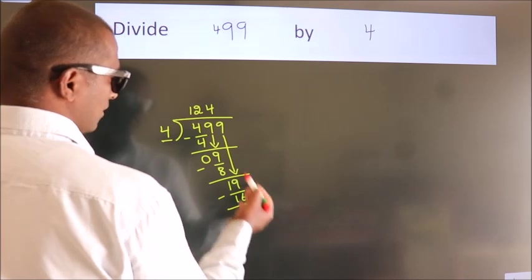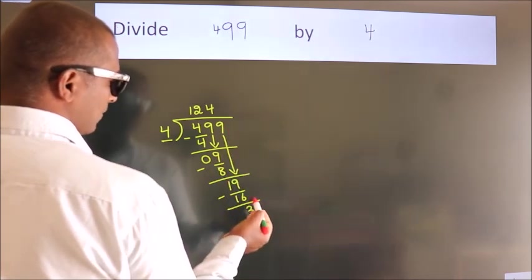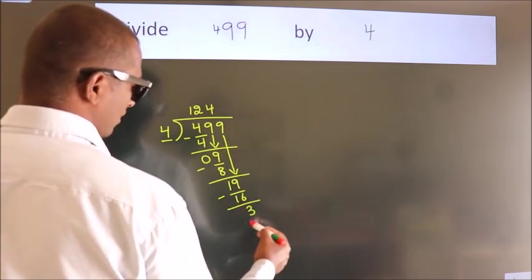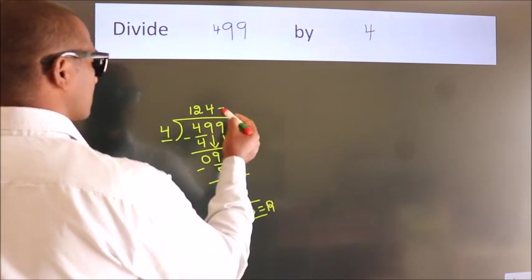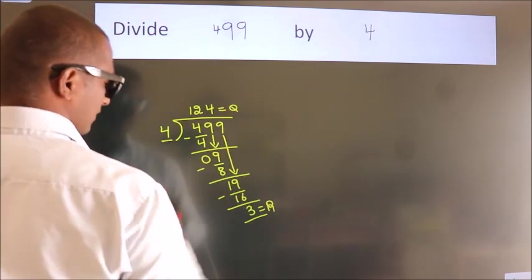After this, no more numbers to bring it down. So we stop here. This is our remainder. This is our quotient: 124.